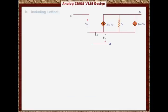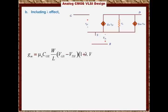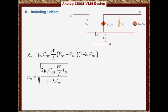If we include the channel modulation effect lambda, because lambda affects the voltage-current relationship, you end up with a more accurate G_M. So G_M becomes μ_N C_OX (W/L)(V_GS − V_th)(1 + λV_DS), or equivalently, G_M = √(2 μ_N C_OX (W/L) I_D / (1 + λV_DS)). When you use the PMOS transistor, make sure you use absolute values, because G_M must be positive. That's how we calculate the transconductance G_M.